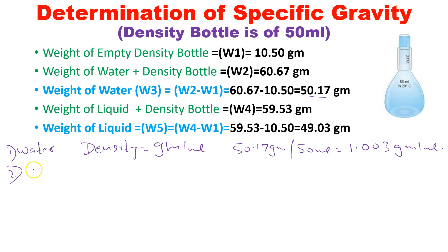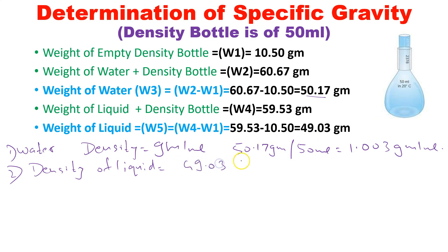Next, I need to calculate the density of the liquid under test. Density of liquid equals the mass of the liquid divided by the volume. The mass of the liquid is 49.03 grams divided by 50 mL, and the value I get is 0.9806 grams per mL.